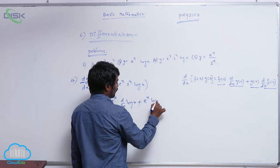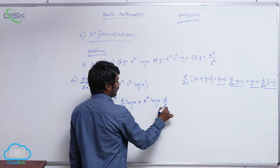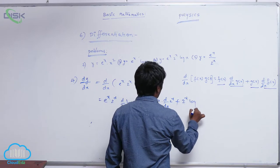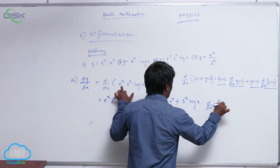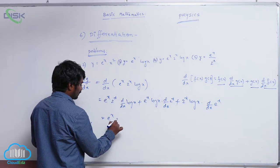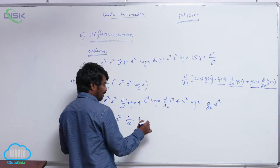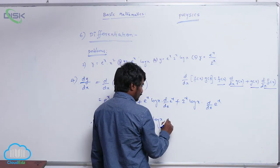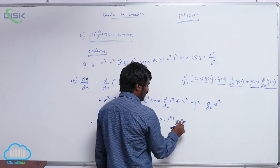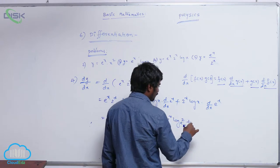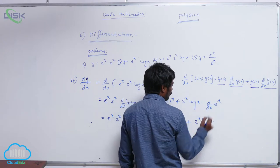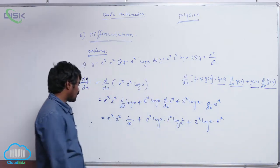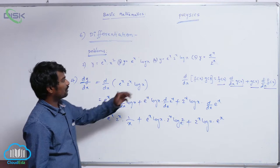That gives: e power x into 2 power x into d by dx of log x, plus e power x into log x into d by dx of 2 power x, plus 2 power x into log x into d by dx of e power x. So the result is: e power x into 2 power x into 1 by x, plus e power x into log x into 2 power x into log 2 base e, plus 2 power x into log x into e power x. This is dy by dx for the fourth problem.